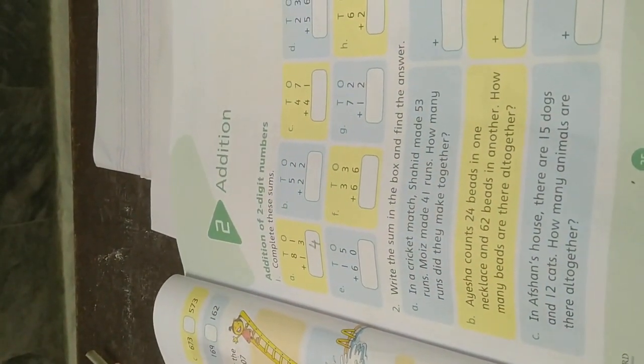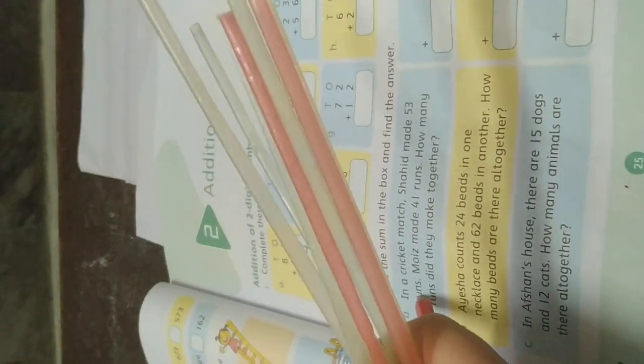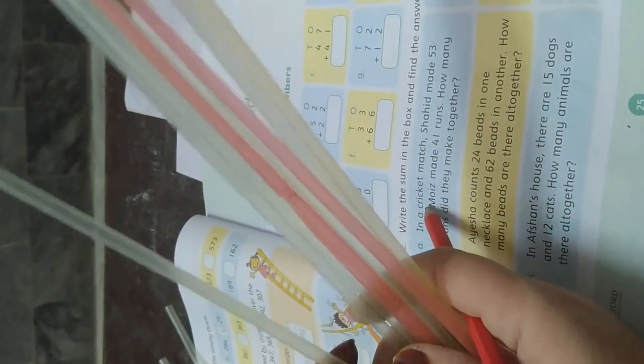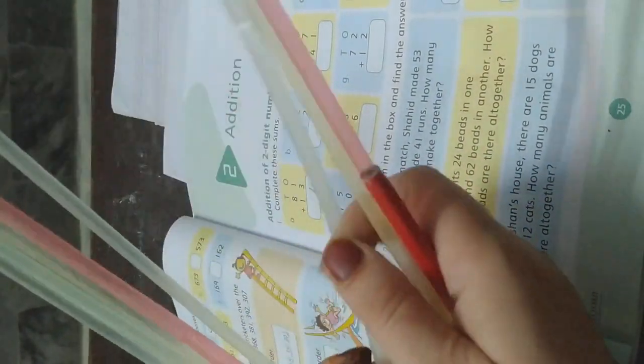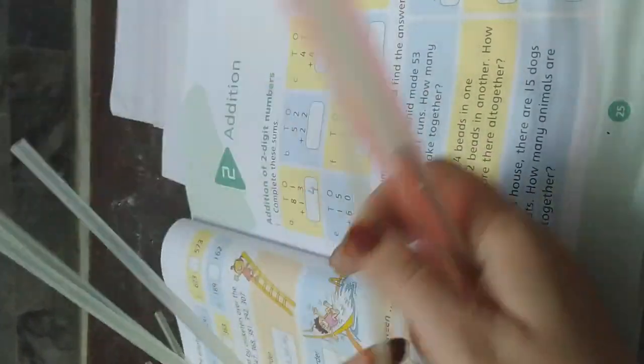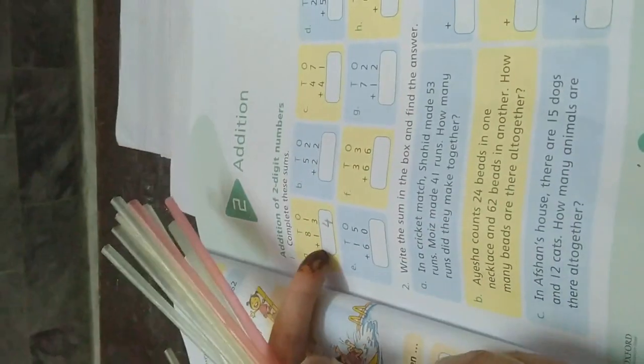Now tens: we have eight and one. Count with me: one, two, three, four, five, six, seven, eight. I have eight straws in my right hand and one straw in my left hand. So I will add these all together. Now how many straws do I have? Let's count: one, two, three, four, five, six, seven, eight, and nine.